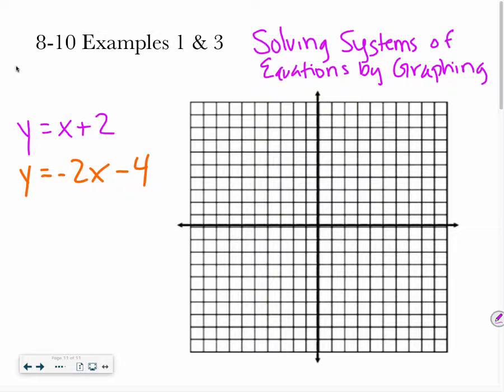We practiced graphing in 8-7, where we practiced graphing from slope-intercept form. I have my equation in slope-intercept form. I know my slope is the number with the x, so in this case it's the invisible 1, and my y-intercept is 2. So I'm going to start at my y-intercept, and my slope is 1, so that means I'm going to go up 1 to the right 1, up 1 to the right 1, and I'm going to keep doing that.